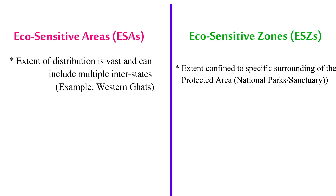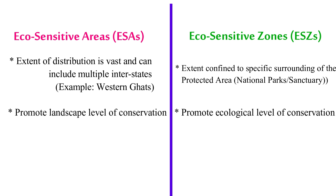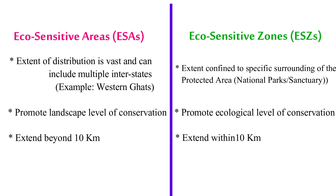Eco-sensitive areas promote a landscape level of conservation, whereas eco-sensitive zones promote only an ecological level of conservation. An eco-sensitive area extends beyond 10 kilometers, whereas an eco-sensitive zone is within 10 kilometers from the boundary of the protected area. Besides these, ESAs are ecologically, economically, culturally, and historically important and significant, whereas eco-sensitive zones are for enhancing the protection of biodiversity and also to prevent the isolation and fragmentation of the natural ecosystem surrounding specific protected areas.